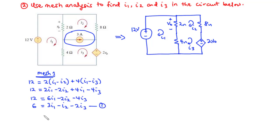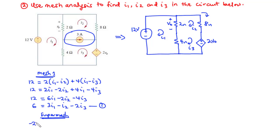Now let's move on to the supermesh. For the supermesh, we consider this particular mesh. The source voltage is 2V0. Notice that we are taking the clockwise direction, so the current produced by 2V0 will oppose the direction we are taking. Therefore, this becomes negative 2V0, and that is equal to the following terms.